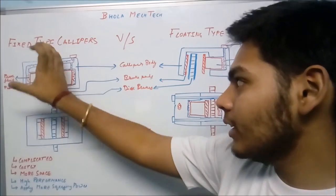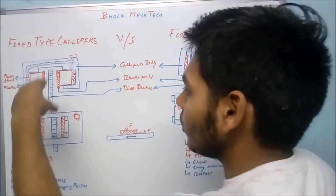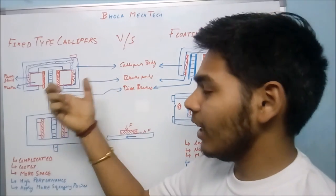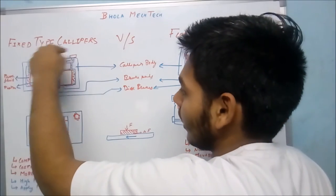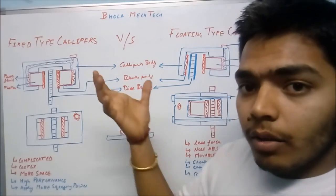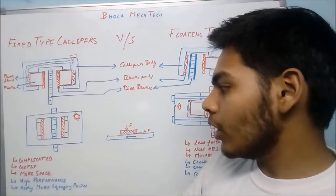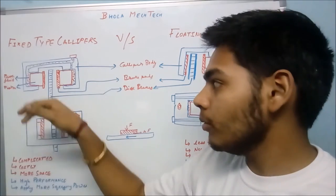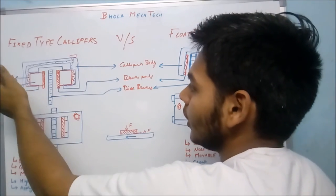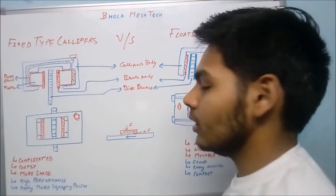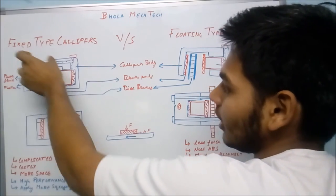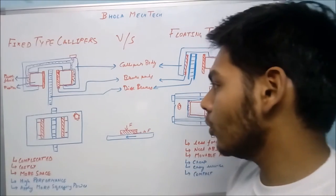There are several advantages and disadvantages of both calipers. The fixed type caliper is somewhat complicated because there are two pistons that actuate, making the design and manufacturing more complex. More cavities are required, making it difficult and costly to manufacture. Servicing cost is also higher because you need to take out both pistons and clean everything. Additionally, the space taken by the fixed type caliper is more.